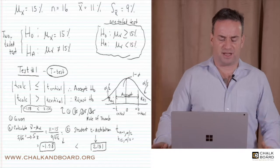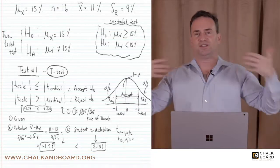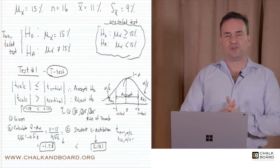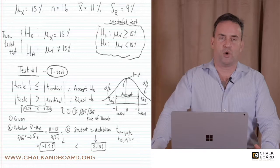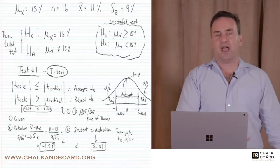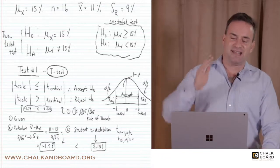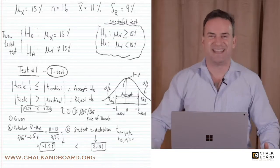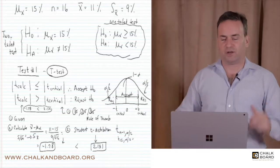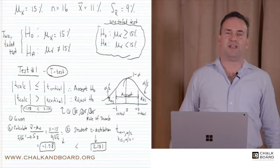Test number one is called the t-distribution, or t-test, or student t-distribution. When you do test number one, you compare your calculated t with your critical t. If the calculated t is less than or equal to the critical t on an absolute value basis — because we don't care if it's negative — we accept the null hypothesis. If the calculated t is greater than the critical t, we reject the null hypothesis.